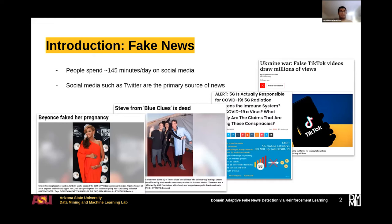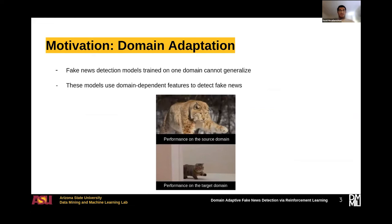However, when it comes to domain adaptation, there is still room for improvement. Fake news detection models that are trained on one domain cannot generalize well, and they won't work on other domains. The main reason for this is because these models use domain-specific features to detect fake news.